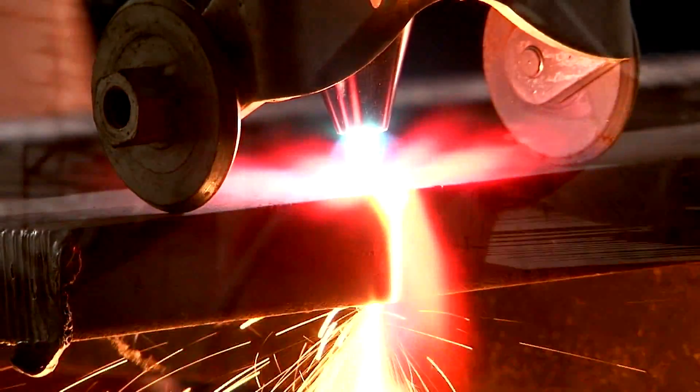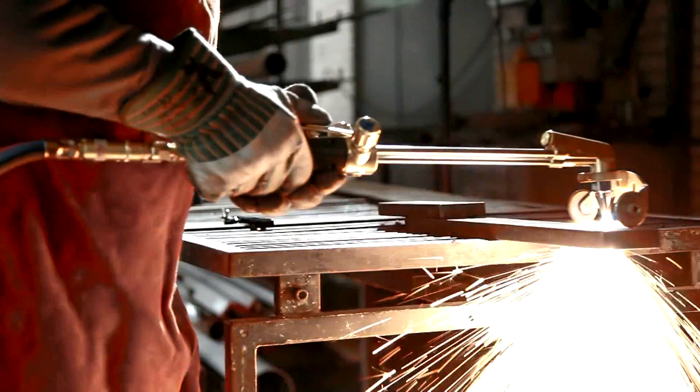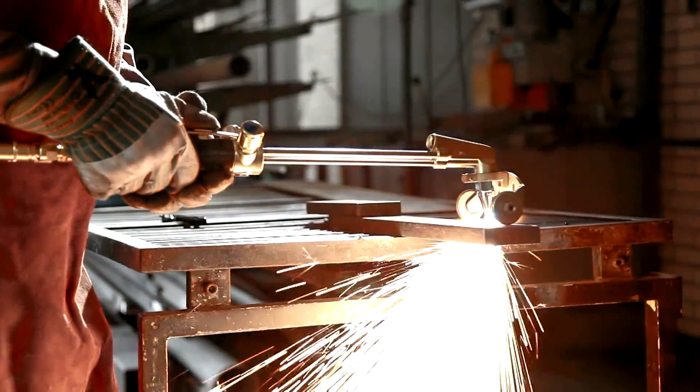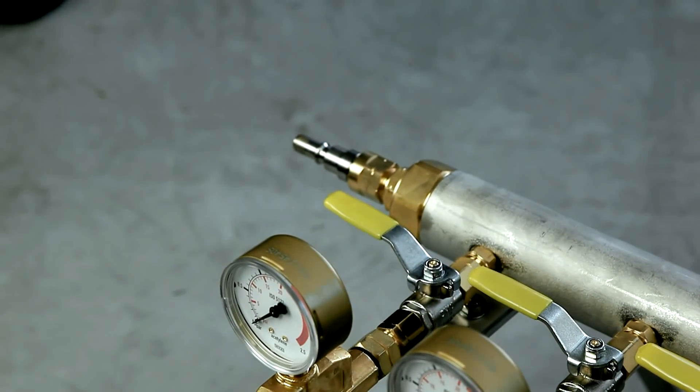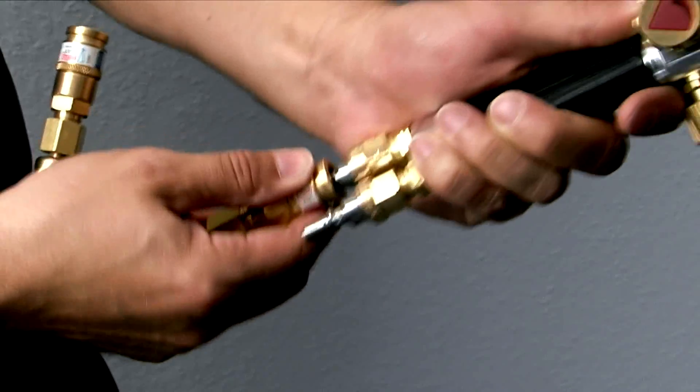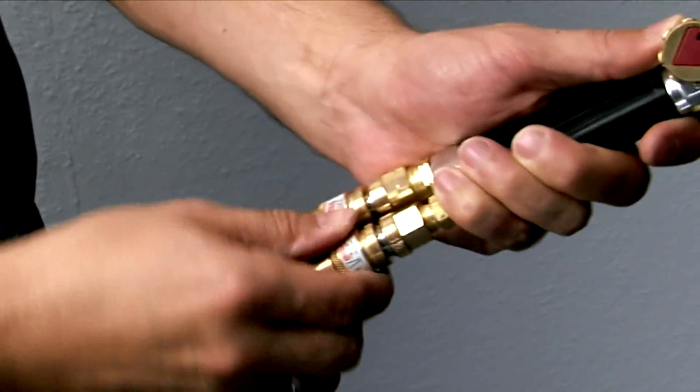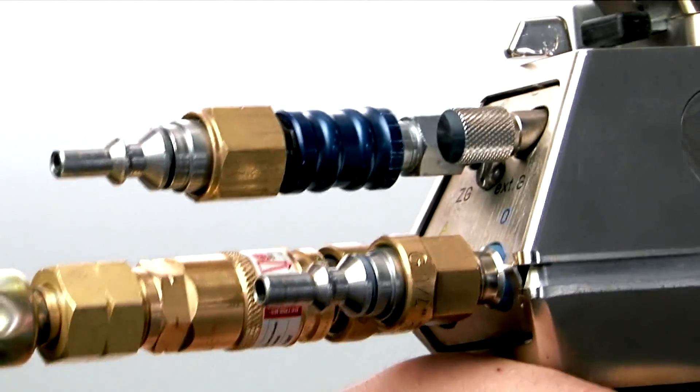But EBITDA hose couplings, which are manufactured in compliance with EN 561 or ISO 7289, and are used in the industry and trades to extend hose lines or to quickly and easily connect welding equipment, happened to be the more economical alternative.